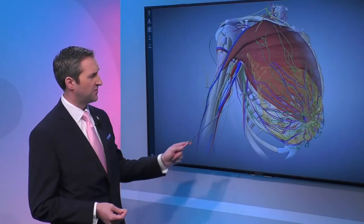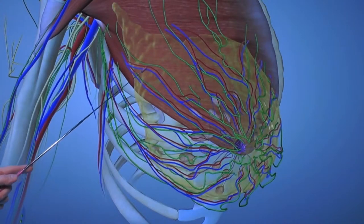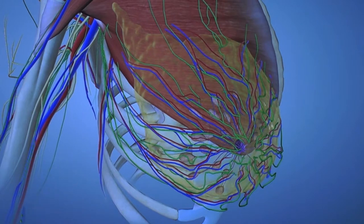A lumpectomy really means that a focal area of cancer is going to be removed. There are a lot of options that involve us as plastic surgeons in breast reconstruction with lumpectomy.